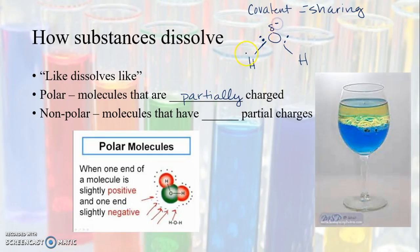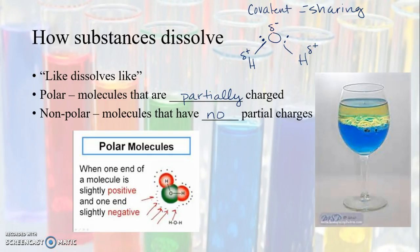Because the electrons sit closer to oxygen, there's not an even sharing, which gives oxygen a slightly negative charge (δ-) and hydrogen a slightly positive charge (δ+). This makes water polar. A nonpolar molecule has no partial charges — equal sharing of electrons. Polar molecules dissolve other polar things, like water. Nonpolar molecules, like oil, don't mix well with water — and that's why oil sits on top of water.